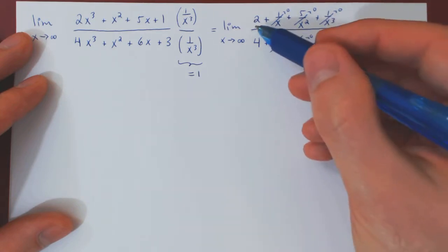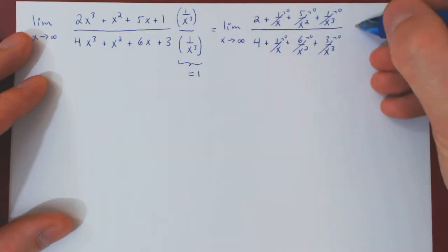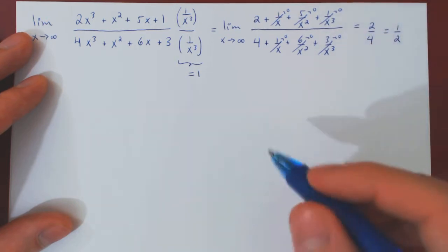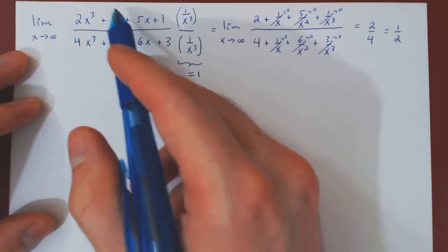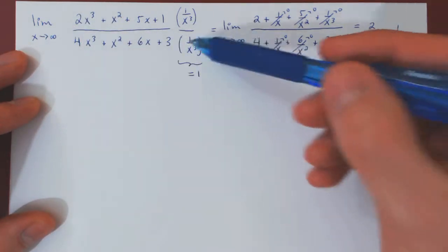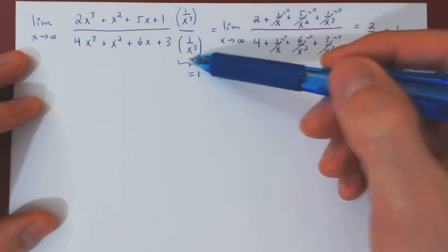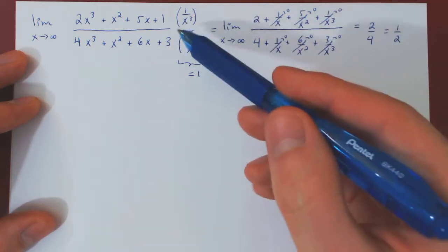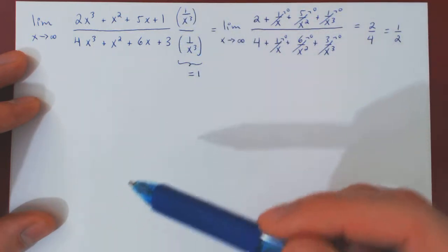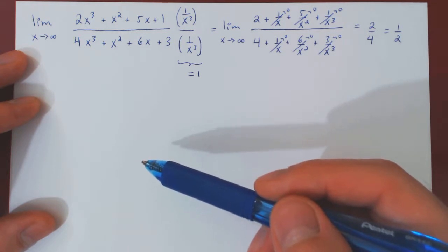So in the end, we're left with quite simply 2 over 4, which of course simplifies to 1 half. And so you see, this is a very simple limit, as it can be tackled with a very simple method using a purely elementary manipulation.